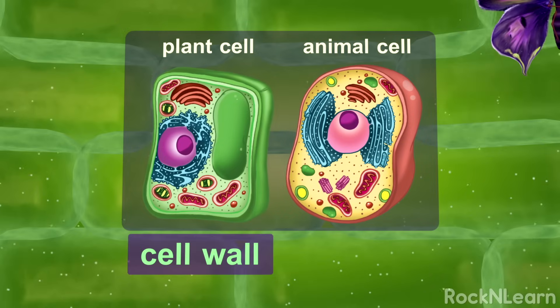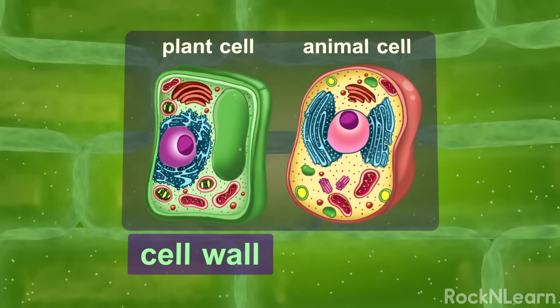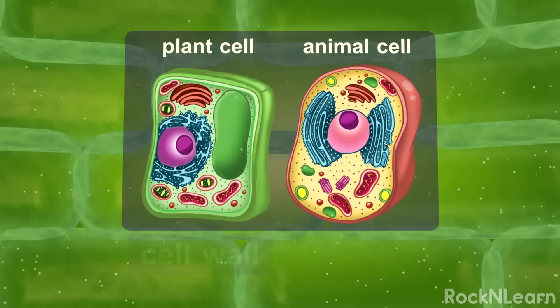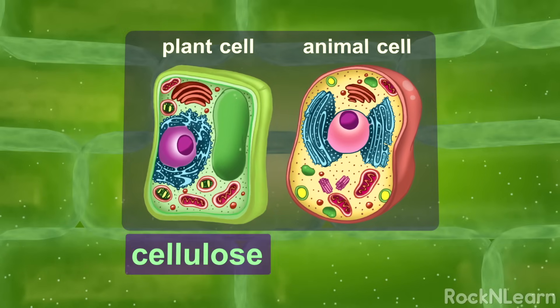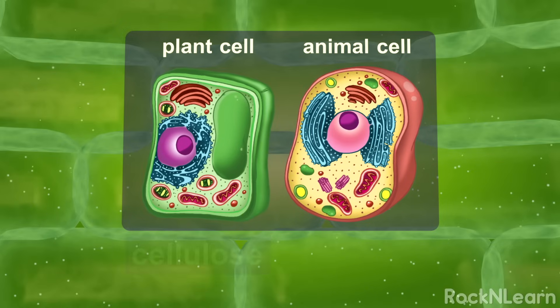For instance, only plant cells have cell walls on the outside, which are made of cellulose. The cell walls help the plant cells maintain their shape.